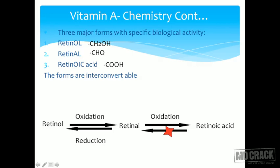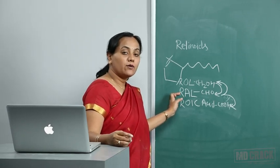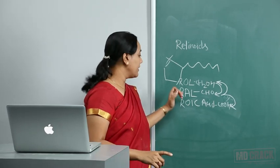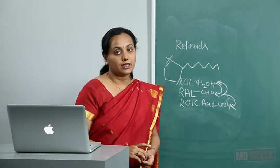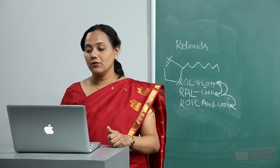The reason this is emphasized is that each compound — retinol, retinal, and retinoic acid — has specific functions in the body. The function of vitamin A depends on which form is present. Importantly, retinal is involved in vision. Vitamin A is required for vision, and it is specifically retinal that plays that role — this is a key point to remember.